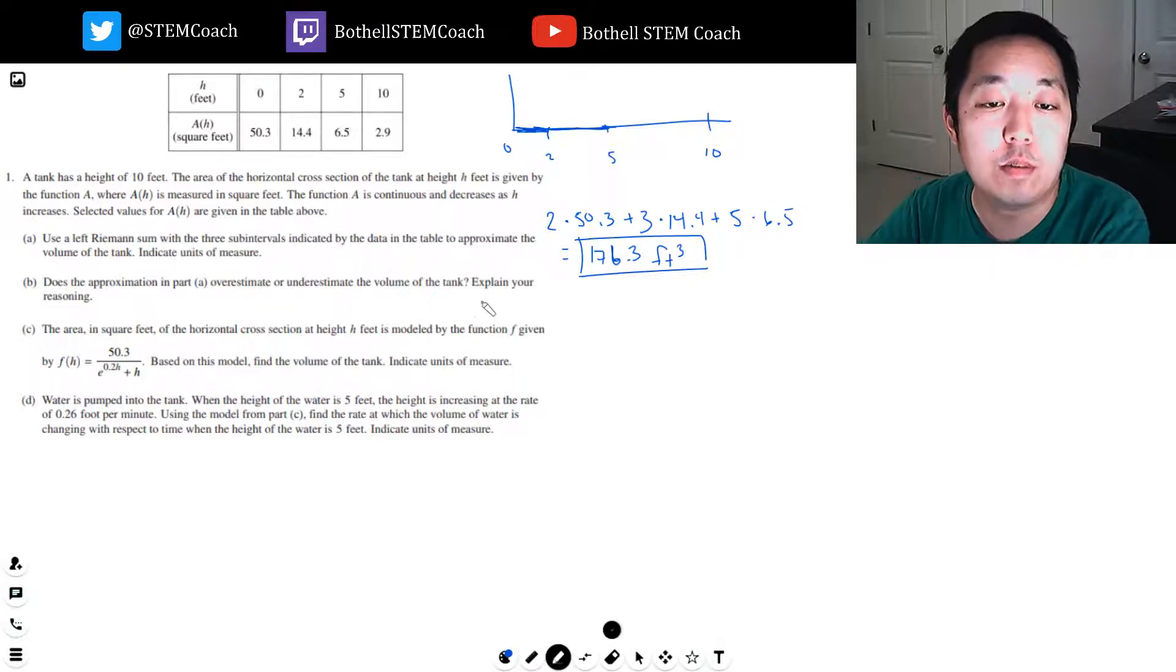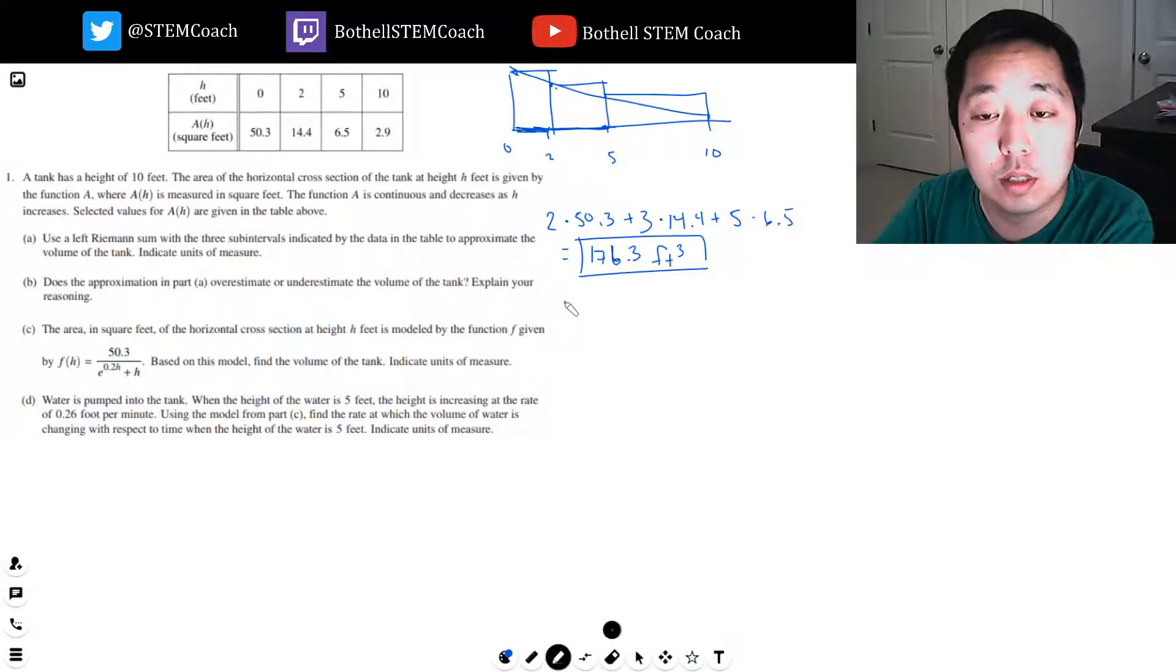Does the approximation in part A overestimate or underestimate the volume of the tank? Explain your reasoning. It's overestimating because the volume is decreasing. So it's an overestimate because A of H is decreasing. And that's sufficient to answer that.